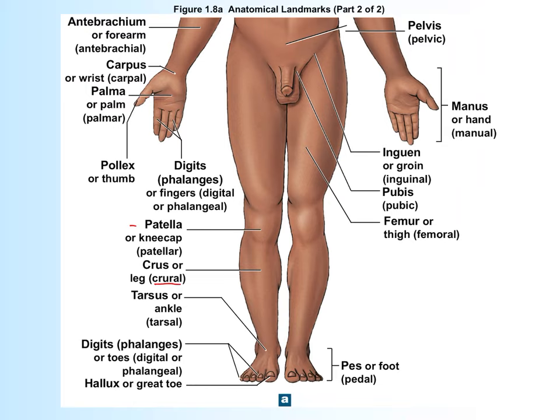Also note that fingers are numbered — your thumb is digit one and has a special name: the pollux. Digits two through five are just called digits. The same applies to the feet: the big toe has the special name hallux, and toes two through five are just called toes or phalanges.